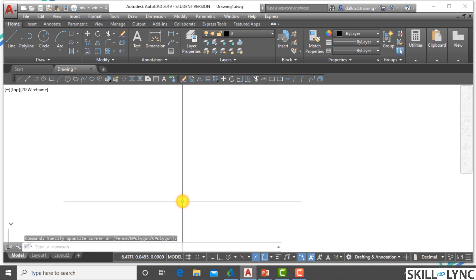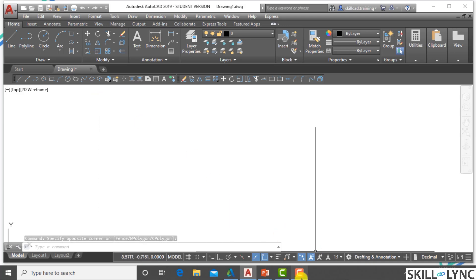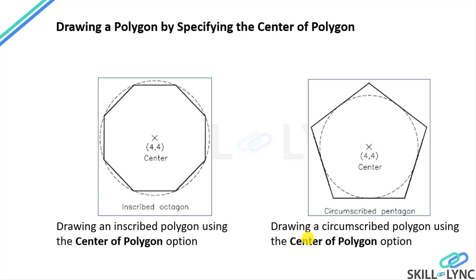What is inscribed and circumscribed? A polygon can be created by two methods: the circle method and the edge method. In the circle method, there are two options — whether the polygon is inside a circle or outside a circle. When it is assumed to be inside a virtual circle, it is called an inscribed polygon. If it is outside a circle, it is called a circumscribed polygon.